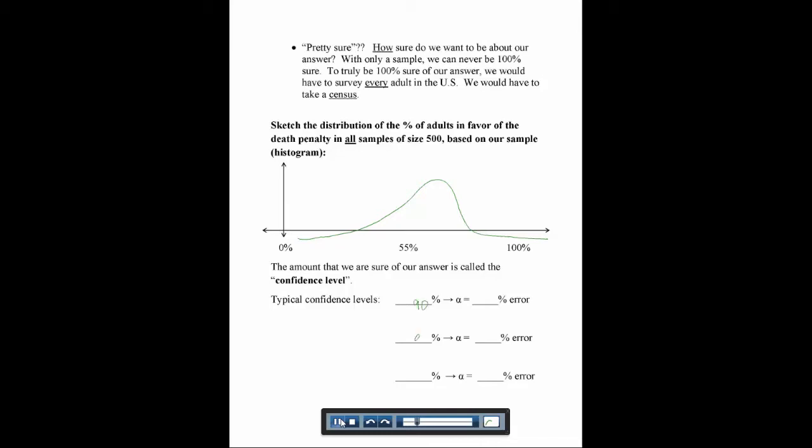How sure we want to be is called a confidence level, and there are three common levels: 90%, 95%, and 99%. Obviously, you always want to be as sure as you can, but sometimes you have to take a larger sample, which may be less practical. If we're 90% confident, that means we have a 10% error. If we're 95% confident, we have a 5% error. And if we're 99% confident, we have a 1% error.